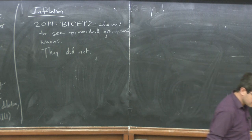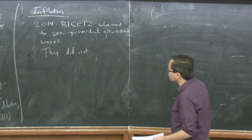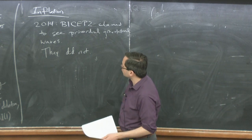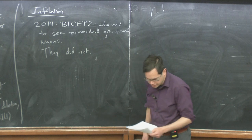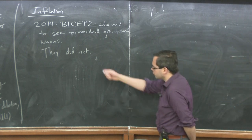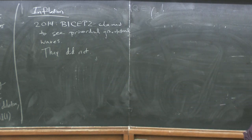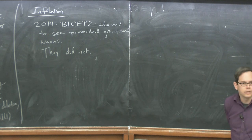They did not. It turned out they were seeing effects of dust in the galaxy producing a signal that mimicked primordial gravitational waves. Nonetheless, there was a brief interval where it appeared primordial gravitational waves had been seen, and the natural thing to do was think about the implications. I still think that's important even though the signal turned out not to be real, because experiments are expected to improve by more than an order of magnitude in the coming years.